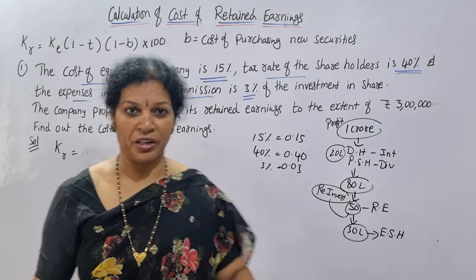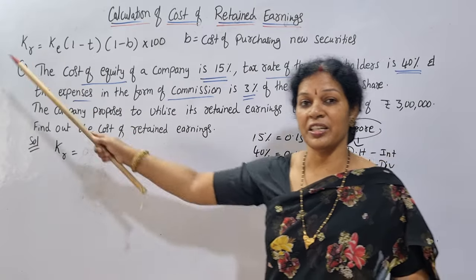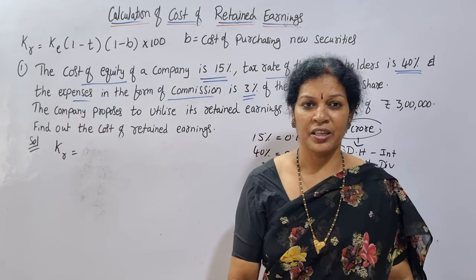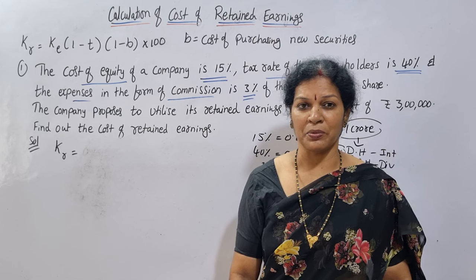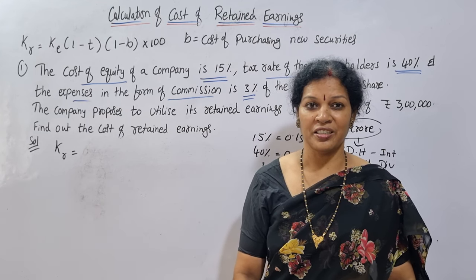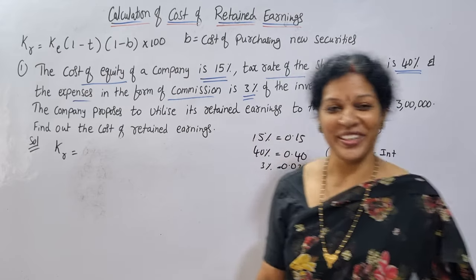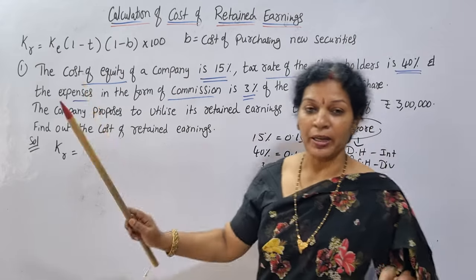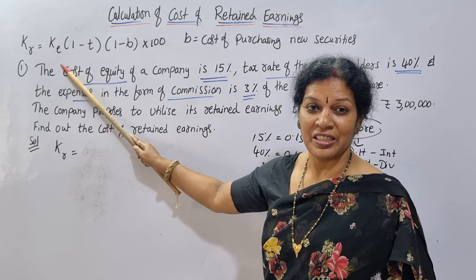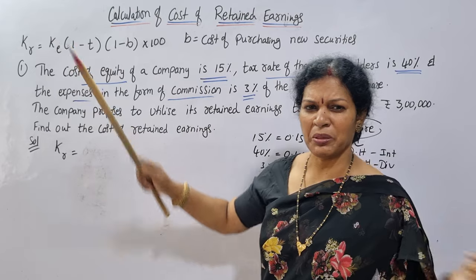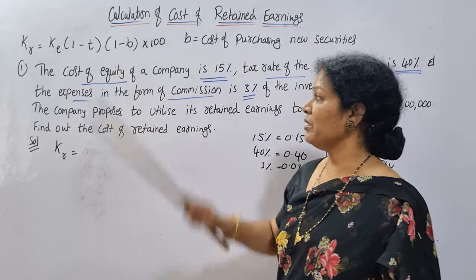This is the formula. Retained earnings means KR — R stands for retained earnings. K means Cost. KD means Cost of Debt, KP means Cost of Preference Shares, KE means Cost of Equity Shares, KR means Cost of Retained Earnings. The formula is: KR is equal to KE into (1 minus T) into (1 minus B) into 100.